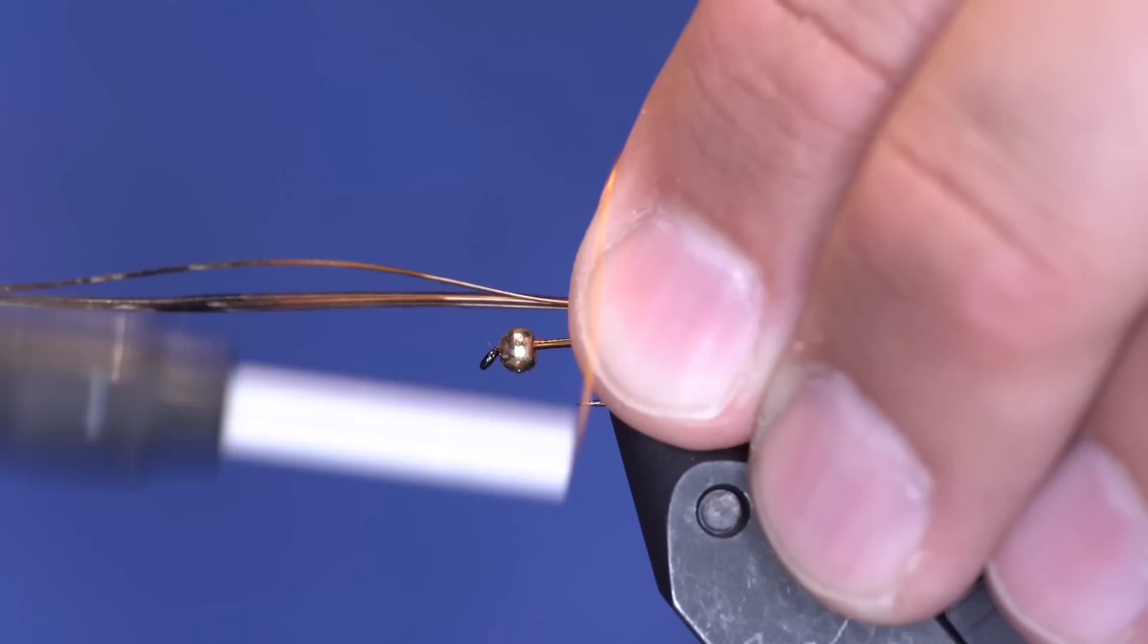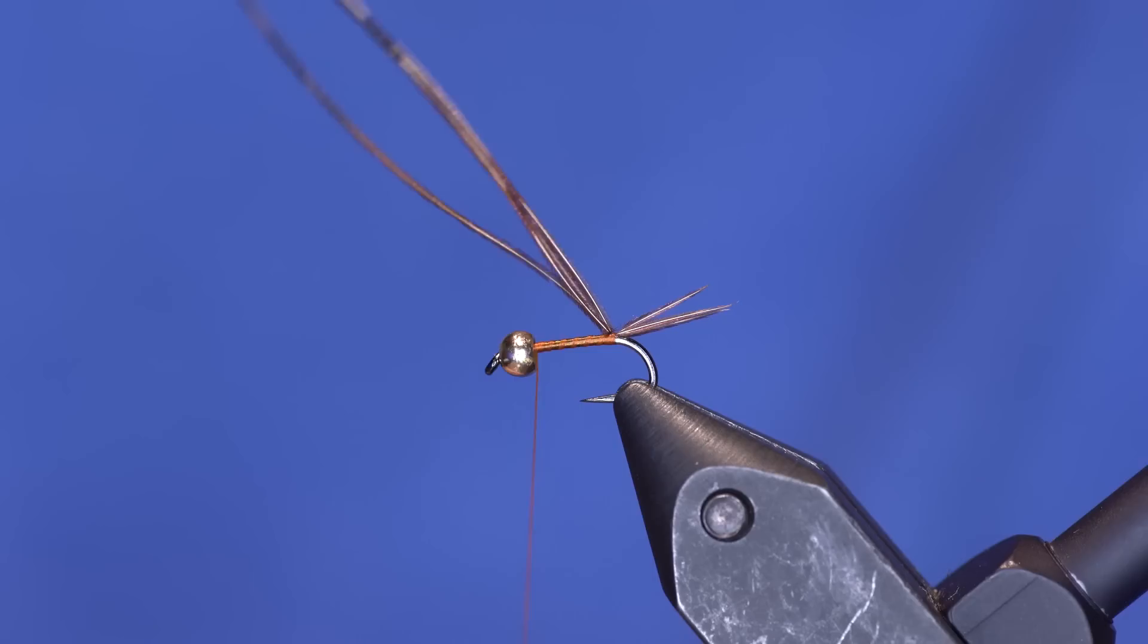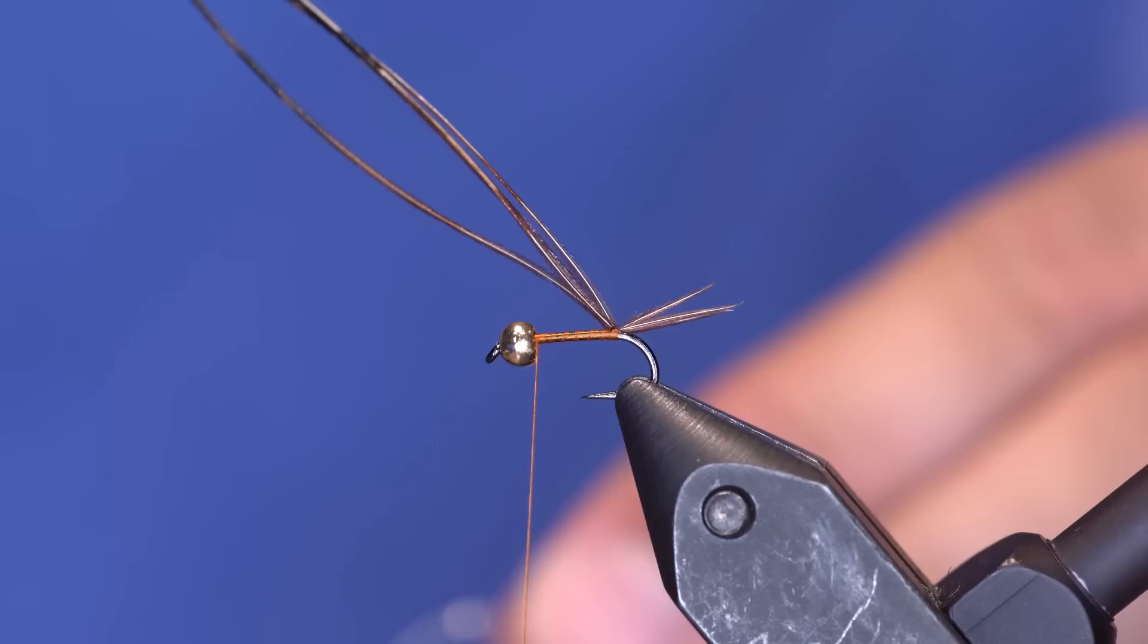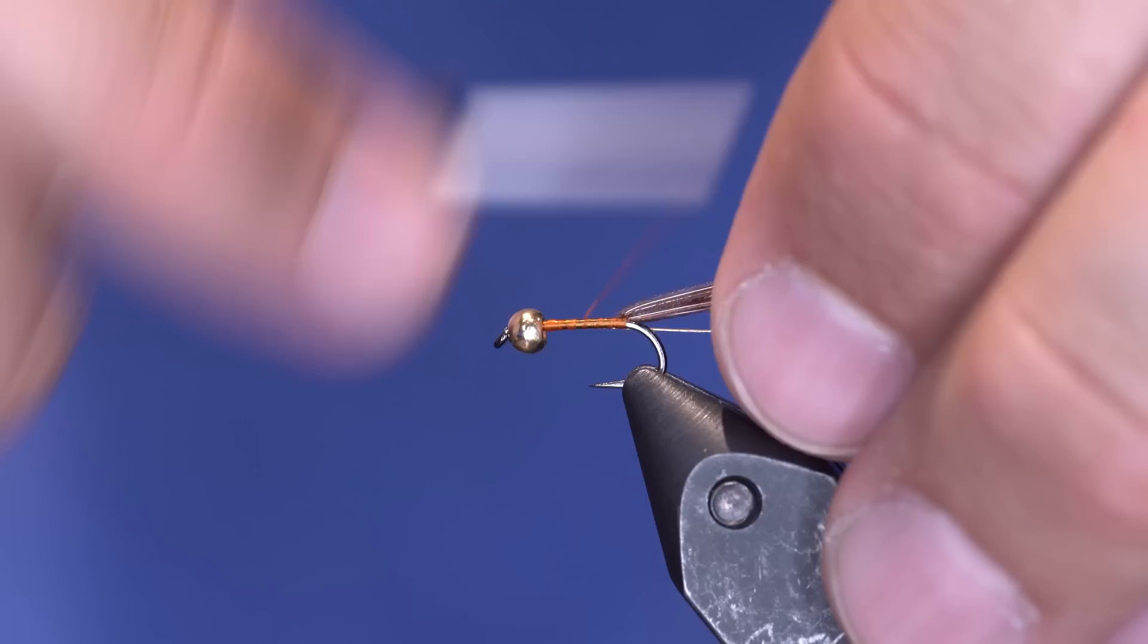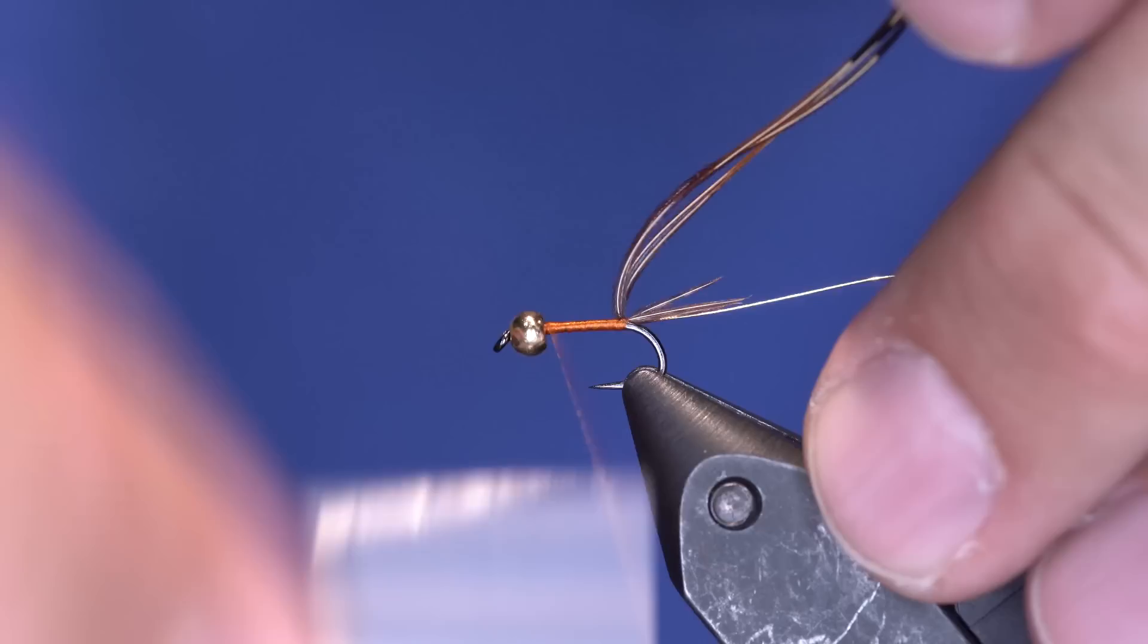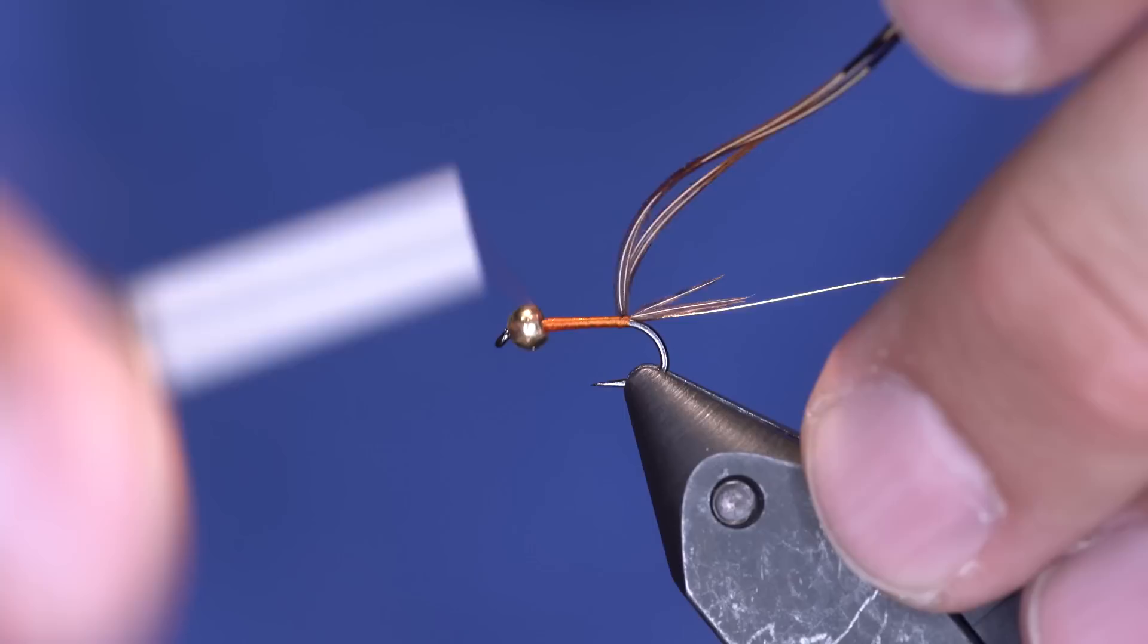So I'm going to take four or five of those fibers and tie those in right at the back of the hook with two turns of thread and lift those up. And then come forward and take some wire the same color that you're going to be using in the fly. I'll tie that in right here behind the bead and take the wire all the way back to the tie-in point. And do one single wrap behind the fibers.